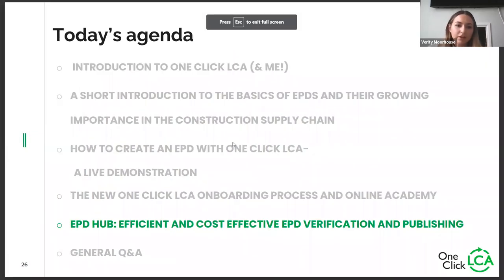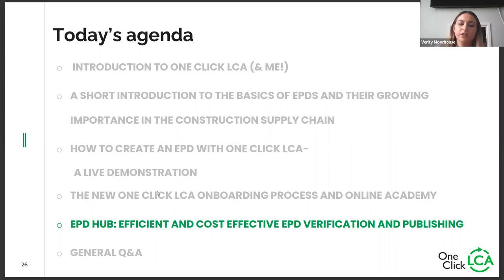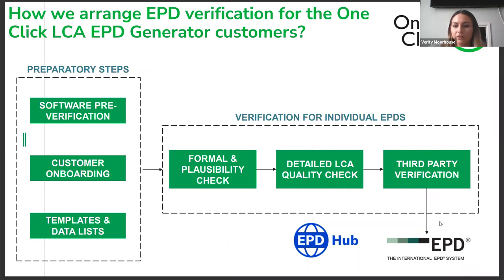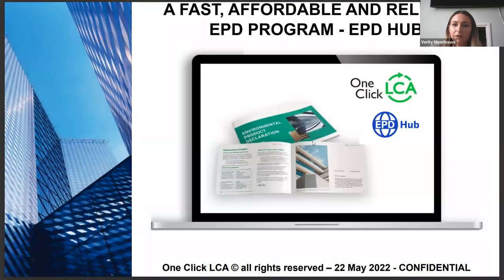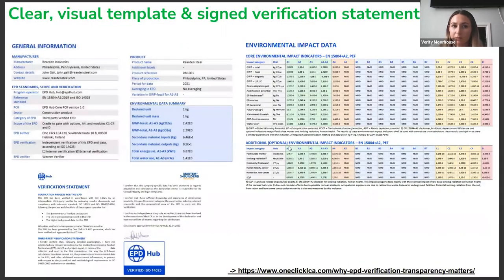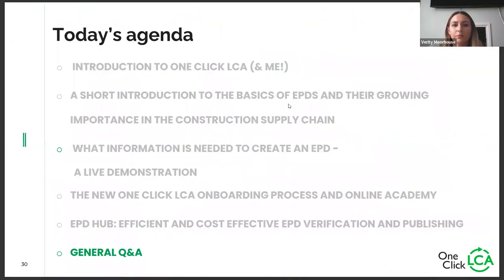The last part is about verification and publishing. All EPDs have to be verified and published by an approved third party — there are about 50 of them out there. We work primarily with EPD Hub and also the International EPD System. EPD Hub is our default because they are a bit quicker, cheaper and simpler — they've effectively been designed to speed up the process. You're looking at about two to four weeks to get an EPD published with EPD Hub. The report it produces is quite concise, nicely laid out, with a data summary on the front.